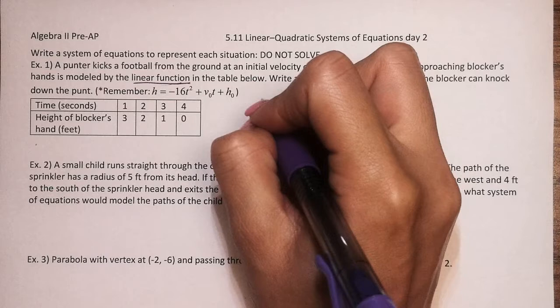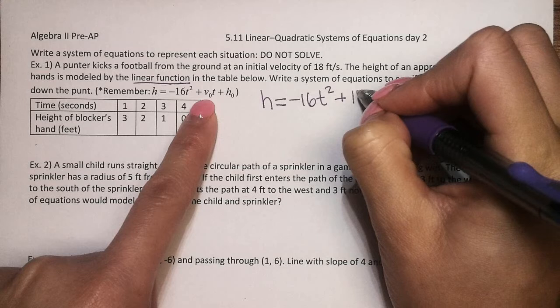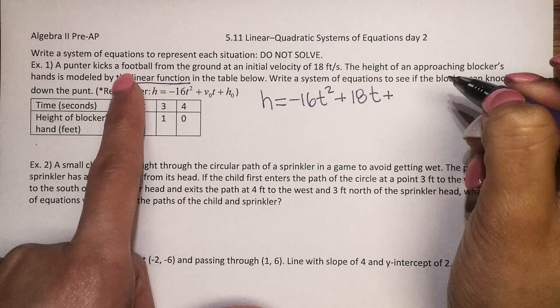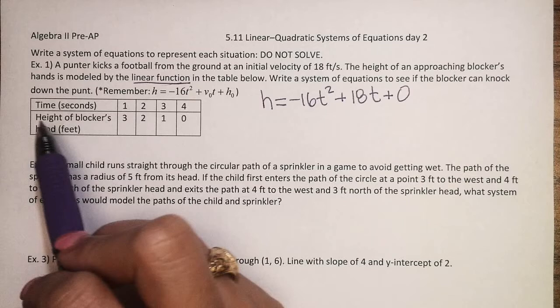Let's start with an equation for the football. And here's a little hint, a reminder of how you do the height of a projectile motion. The height would be negative 16t squared plus the initial velocity, so 18t, plus the initial height. And the football was kicked from the ground, so it would be plus zero. You can just leave that off if you want. Okay, so that's the equation for the football.